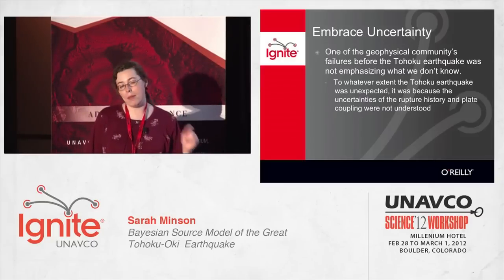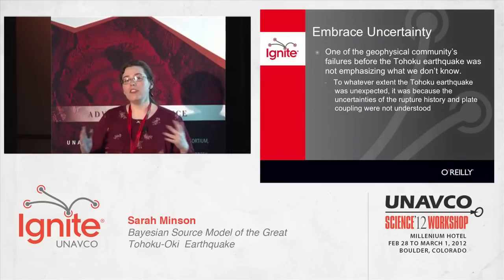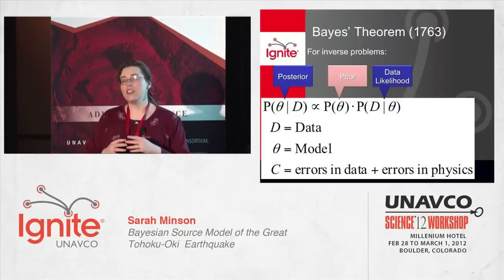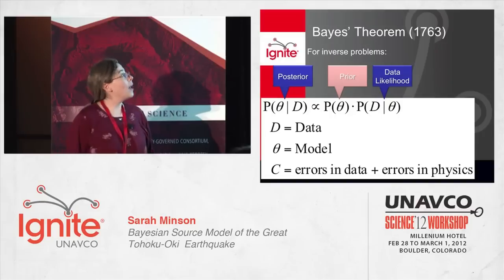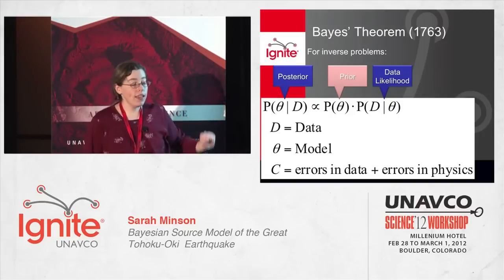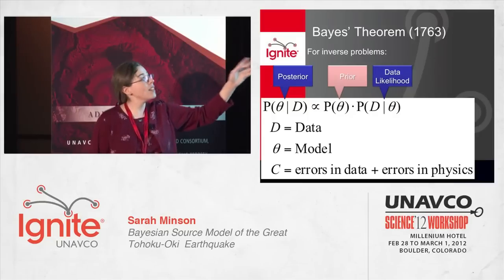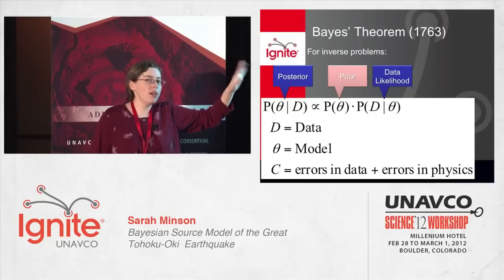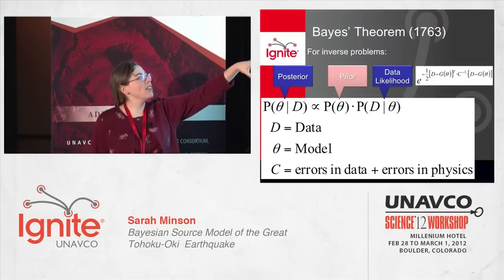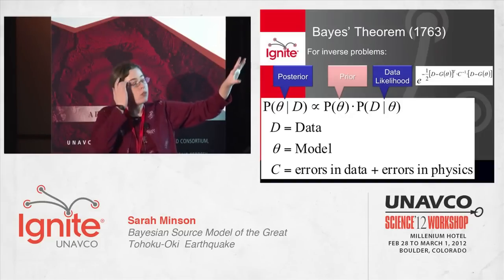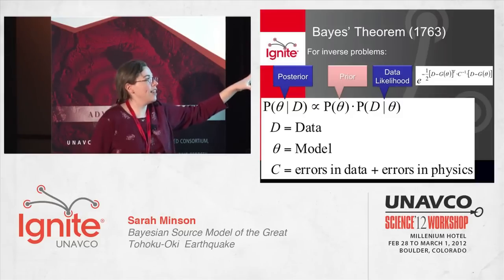The beauty of Bayesian methods is that instead of finding one model, you find the probability distribution that describes the ensemble of all models that fit the data. Bayes' theorem from 1763 says that the distribution of all possible models is merely the product of the prior distribution — whatever your prior constraints on the model are — times the data likelihood, which is merely the exponential of the least squares residual between the data and the output of your forward model, G of theta in this case.